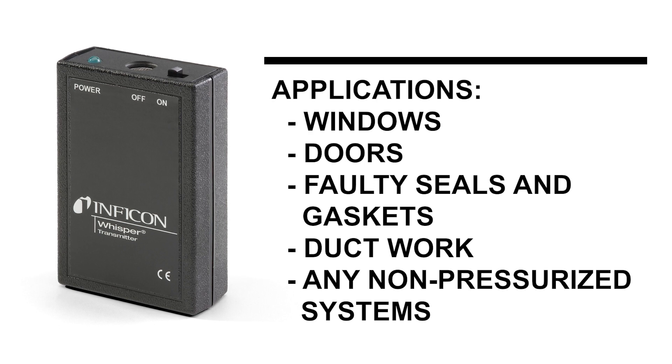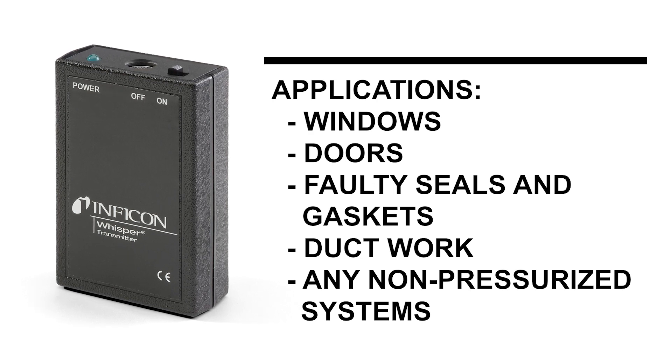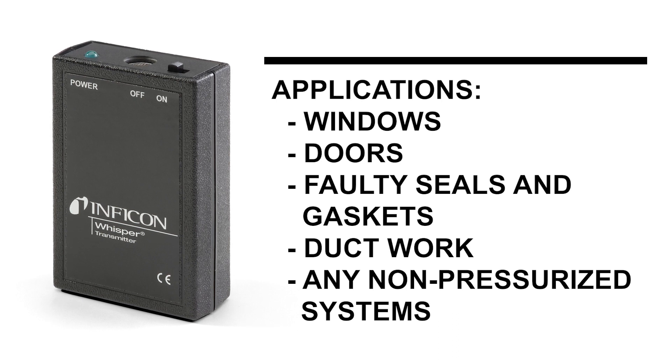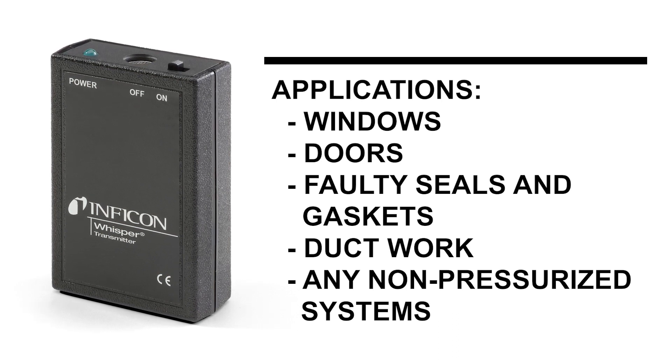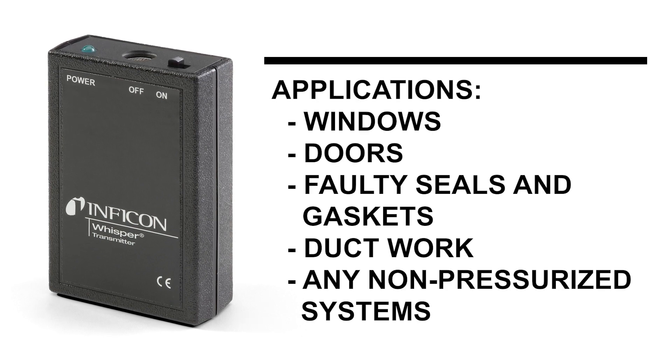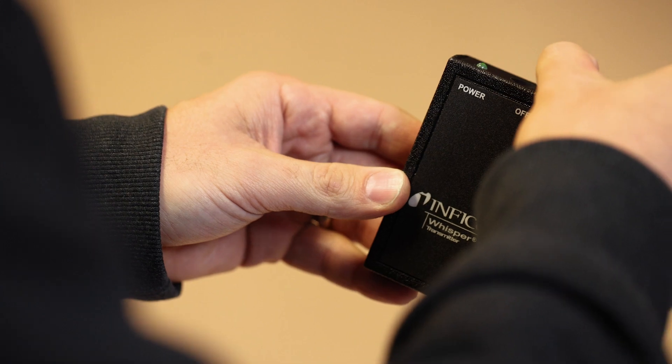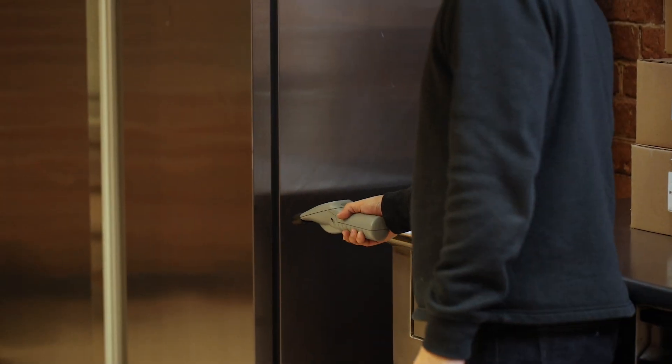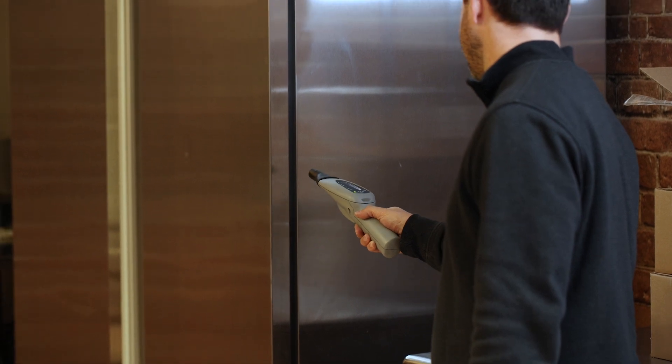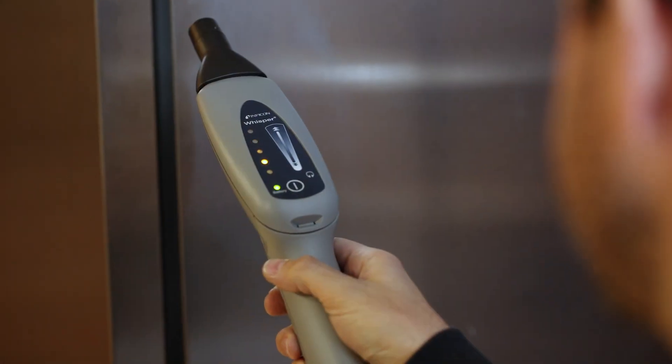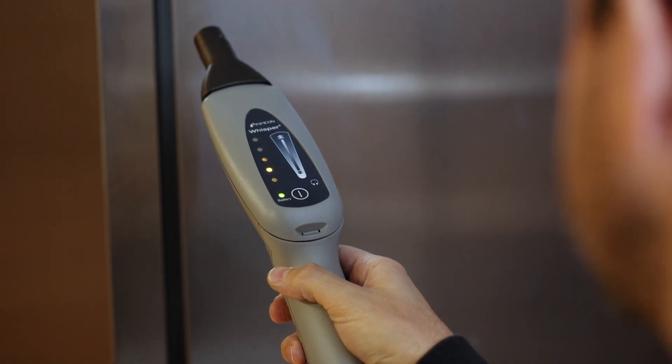Whisper transmitter emits an ultrasonic frequency that only Whisper can hear, allowing for easy identification of leaking seals or gaskets in non-pressurized enclosures, such as walk-in coolers or other sealed doors. Turn the transmitter on, place it inside the enclosure, and use Whisper to trace along the outside of the seal. Areas that are poorly sealed will allow the signal from the transmitter to escape and cause Whisper to alarm.